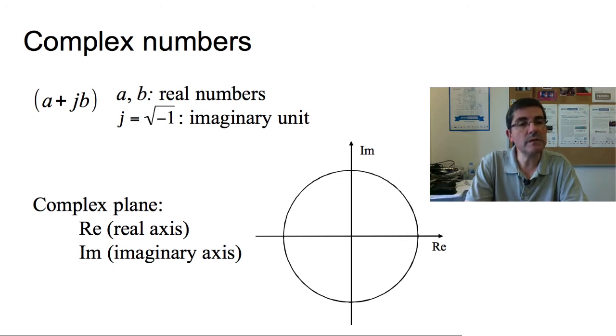So jb composes the imaginary part. And then these numbers, these complex numbers, are normally represented in what we call the complex plane, shown here, in which the real part is the horizontal axis, so it's plotted on the horizontal axis, and the imaginary part, the b value, is plotted in the vertical axis. And then we normally have this circle, which is magnitude one, so this is what we call the unit circle. And here are all the complex numbers that have magnitude one.